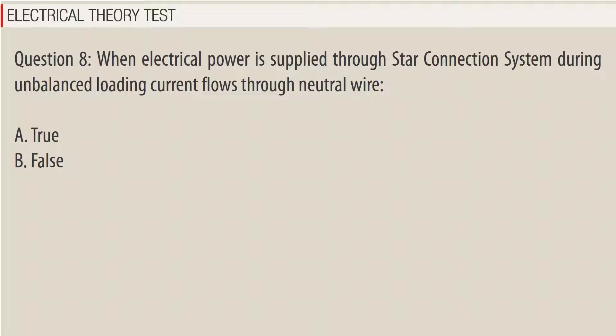Question 8: When electrical power is supplied through a star connection system, during unbalanced loading, current flows through the neutral wire. A. True, B. False.